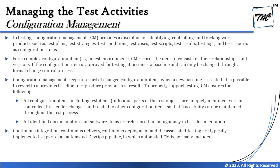Let's quickly look at what the syllabus is trying to convey about configuration management. In testing, configuration management provides a discipline for identifying, controlling, and tracking work products — such as test plan, test strategies, test conditions, test cases, test scripts, test results, test logs, and test reports — as configuration items. For a complex configuration item, CM records the items it consists of, the relationships, and the versions. If a configuration item is approved for testing, it becomes a baseline and can only be changed through a formal change control process.